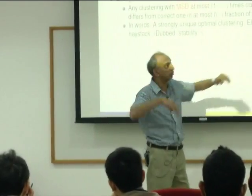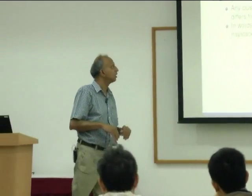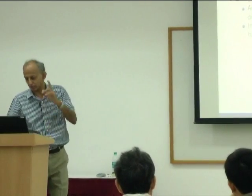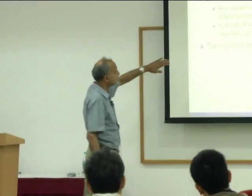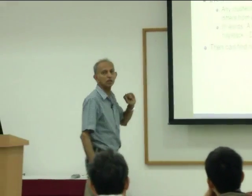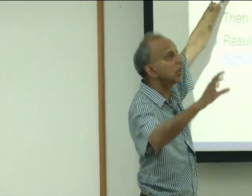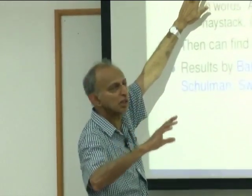Maybe I'll call this an elephant in a haystack instead of a needle in a haystack — it's a smooth haystack in the space of clusterings, and there's one elephant sticking out, which is the optimal solution, and maybe that's why it's easy to find. Theoretically it's been shown that if this assumption is valid, then you can find this essentially unique clustering very efficiently. There are several papers on this; the idea is that if there is a strongly unique clustering, if you optimize mean squared distance, you've essentially got the clustering.